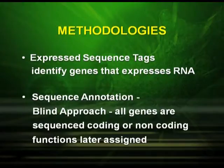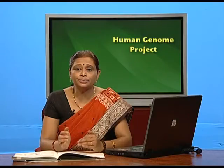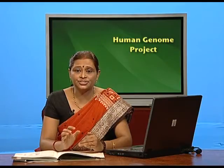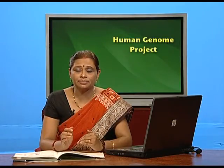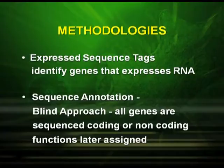The methodologies to study HGP are: first, expressed sequence tags, to identify genes that express RNA — here we identify only the genes that are expressed. The second important methodology is sequence annotation, which is a blind approach where genes are sequenced whether they are coding or non-coding, containing both introns and exons, and functions are assigned to them later.